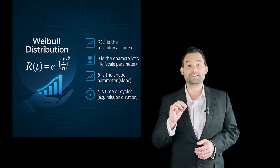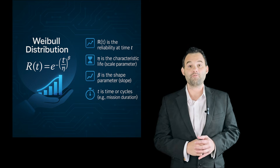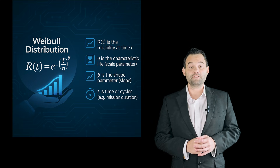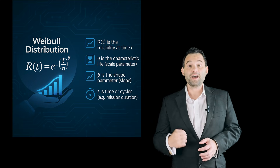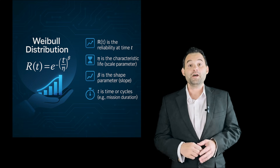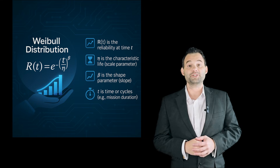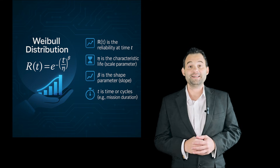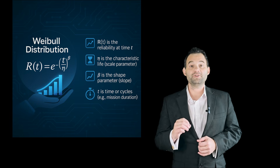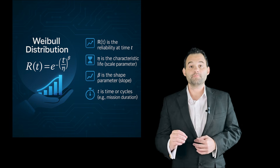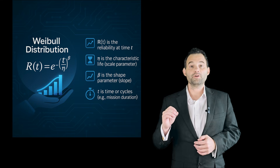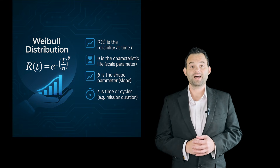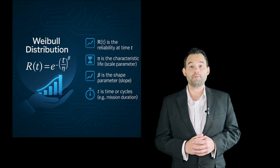Let's now talk about determining sample size to demonstrate that we meet reliability and confidence targets. Pictured is the parametric reliability demonstration using the Weibull distribution, where R(t) is the reliability at time t, eta (η) is the characteristic life — also known as the scale parameter — beta (β) is the shape parameter, also known as the slope, and t is time or cycles, for example, the mission duration.